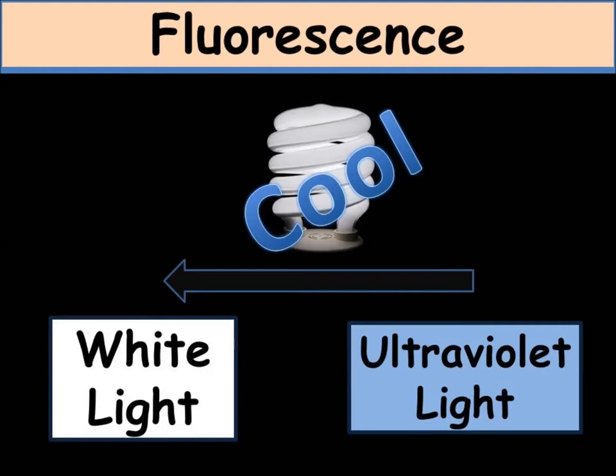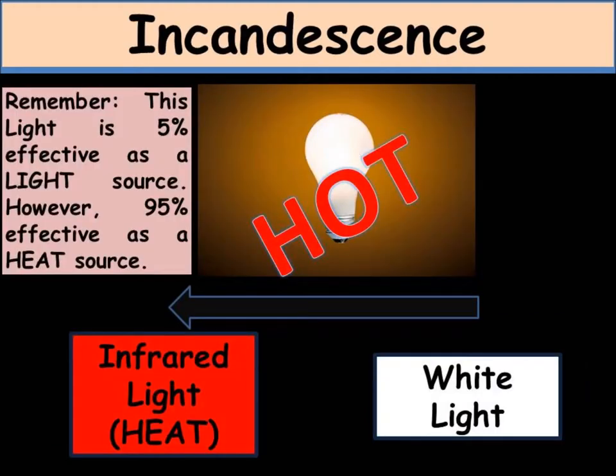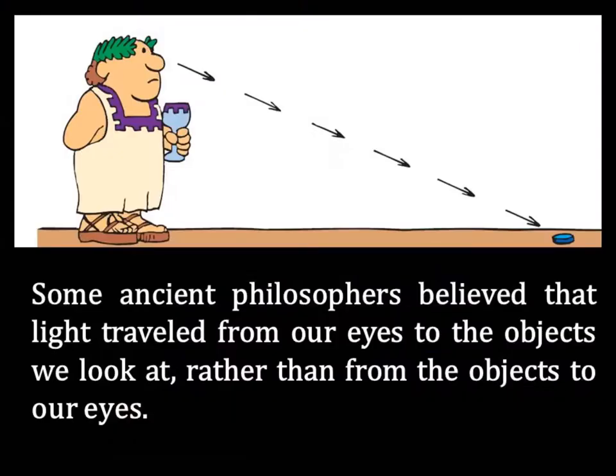Fluorescence is when you go from ultraviolet to white light. That's a fluorescent bulb, they're cooler, cool bulbs. These are the hot bulbs. This light is 5% efficient as a light source, and 95% effective as a heat source. Fluorescence and incandescence is an important idea.